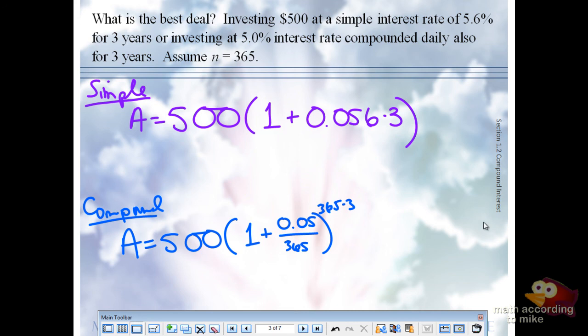What do you get for the simple interest approximately? Yep, that's a nice whole number, $584, which means we made $84 in interest.